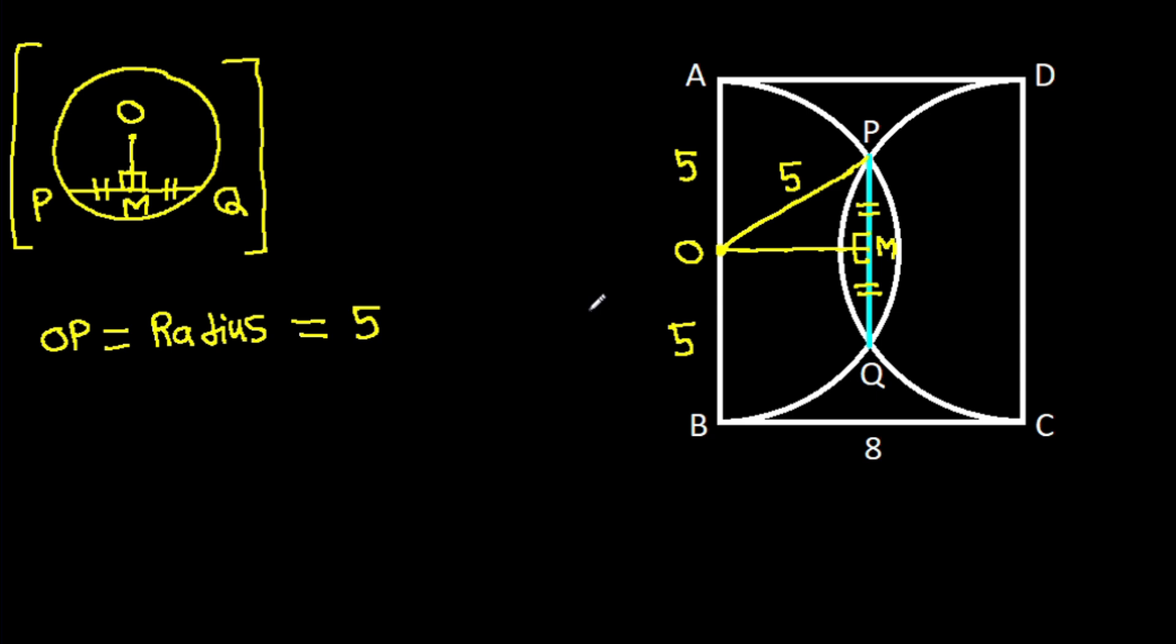And we have BC is 8, so OM will be BC over 2, that will be 8 over 2, which is 4. So OM is 4.